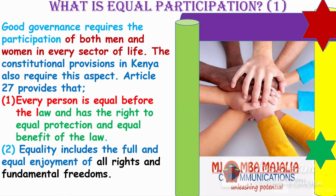On paper every person is equal before the law — though we know the rich can sometimes buy the law, and those in politics or with influence can do the same. But it's much better than under the independence constitution. Every person is equal before the law and has the right to equal protection and equal benefit of the law. Equality includes the full and equal enjoyment of all rights and fundamental freedoms.